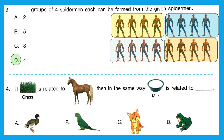Question 4: 'If grass is related to horse, then in the same way milk is related to?' We need to find who drinks milk the way a horse eats grass. It's pretty clear — our cute cat. So option C is the right answer.